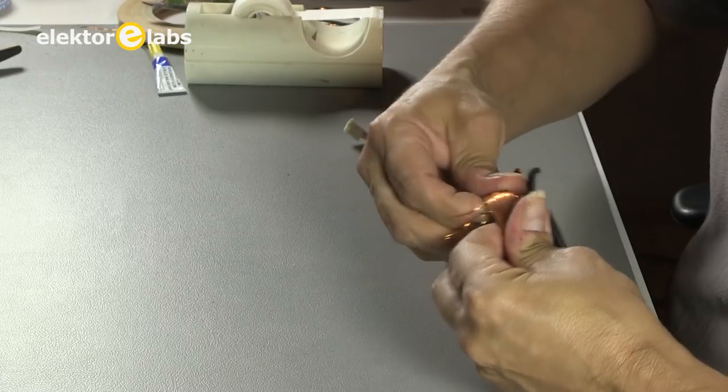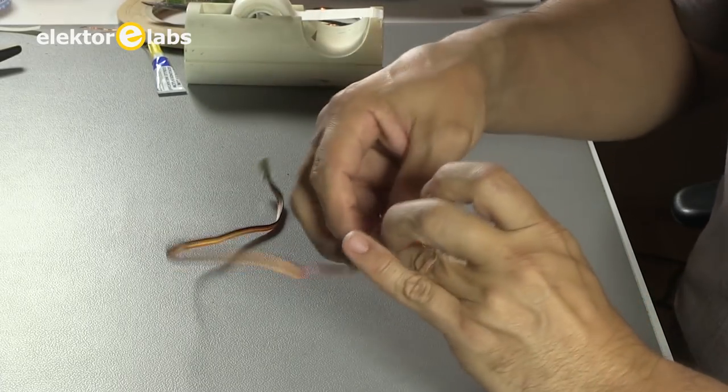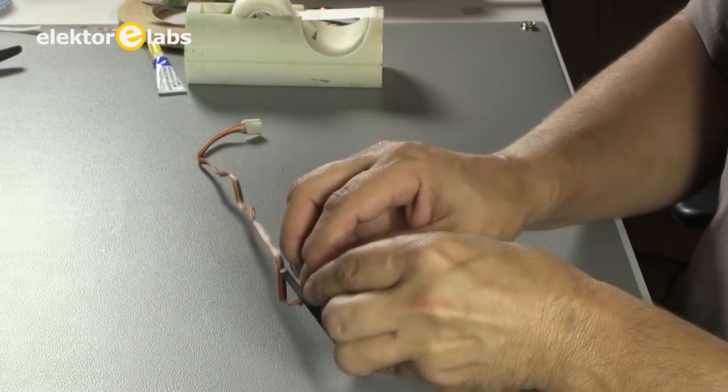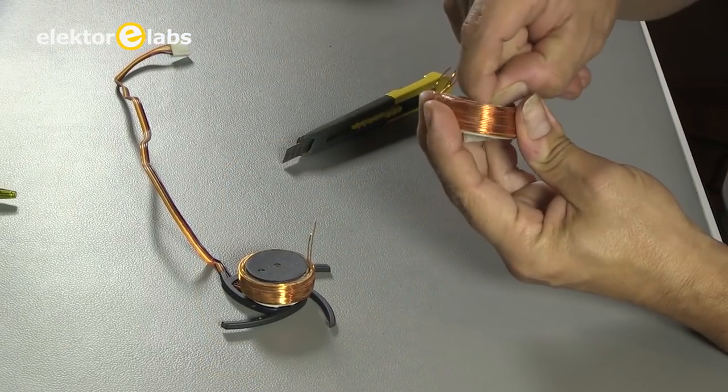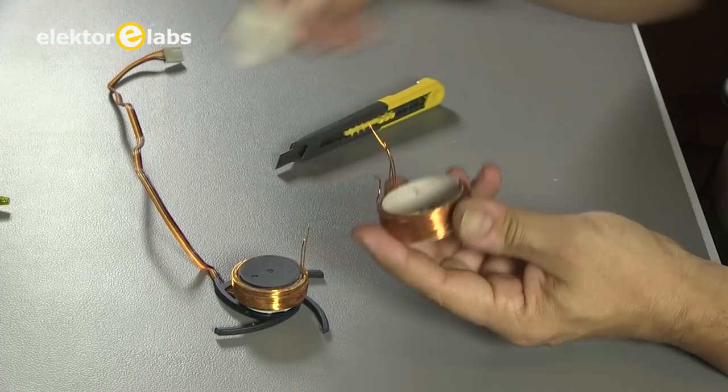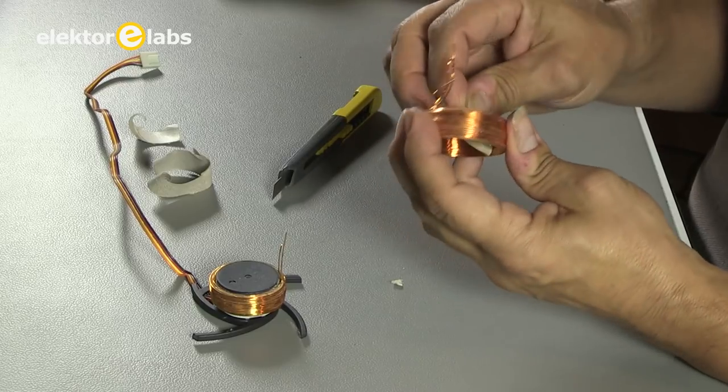Once the glue is well set, you can carefully slide the primary off the secondary. Here it is, all that's left for you to do now is carefully remove the strip of cardboard and the first strip of double-sided tape, which no longer serve any purpose.